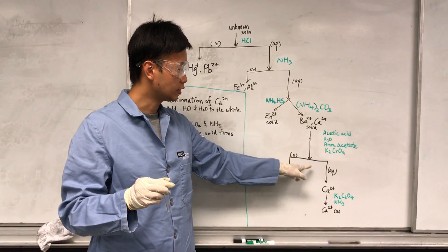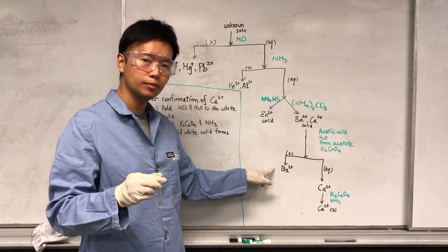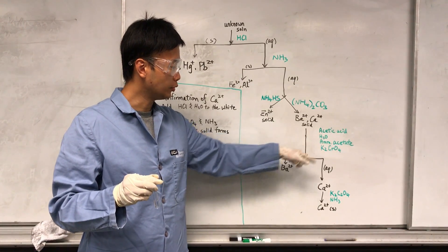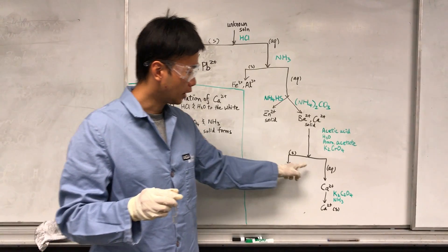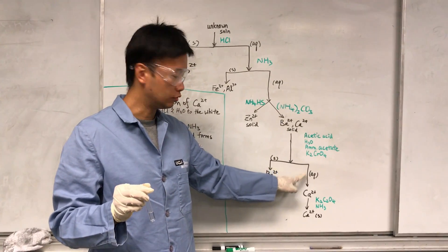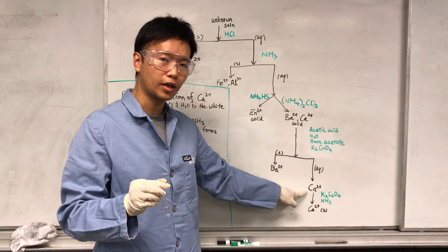Then I will continue the testing to separate out the barium by adding this chemical reagent. So if I have barium, it will form a precipitate, and then I can test for potential calcium.